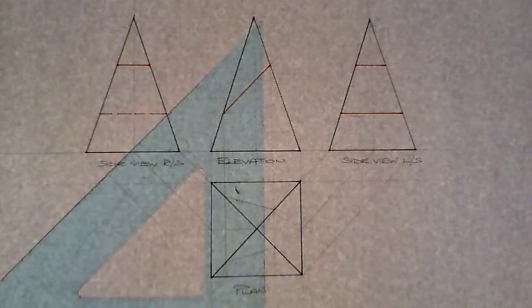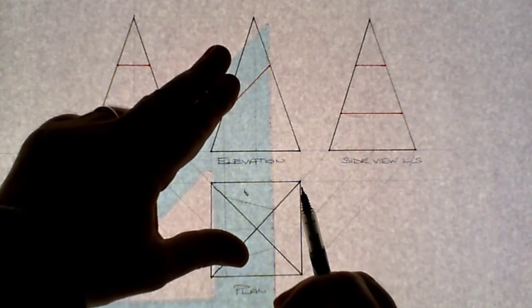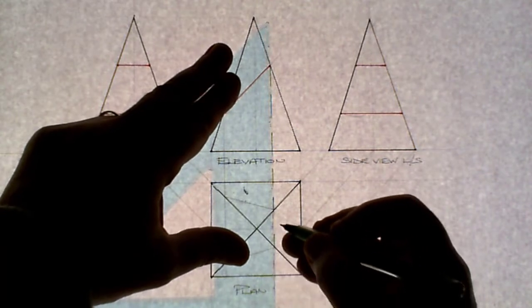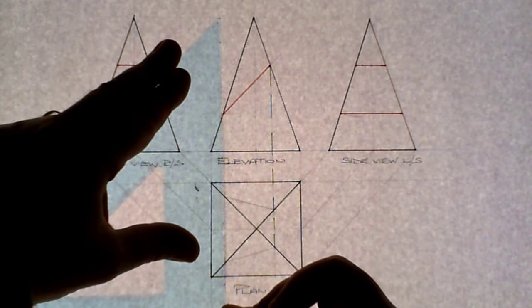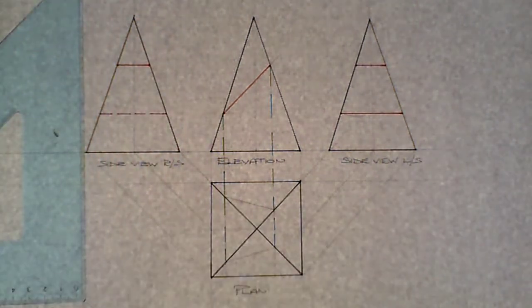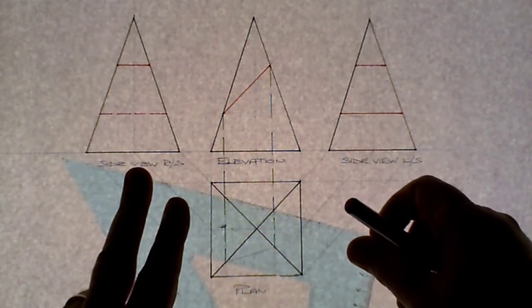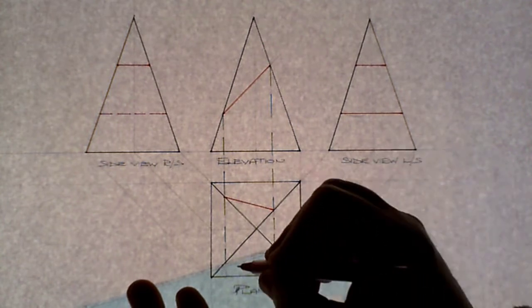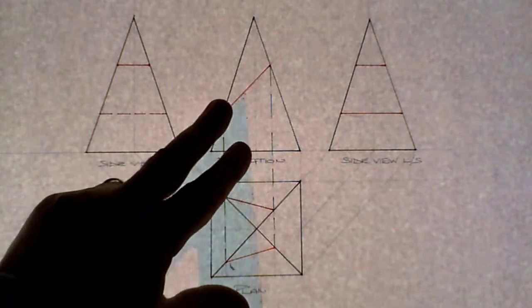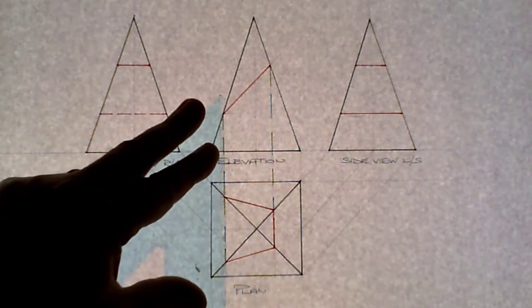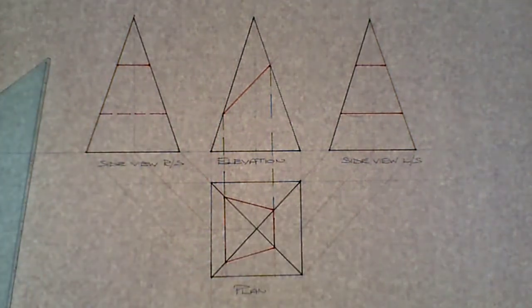Indicate the points in green, then show the imposition of the cut on the plan — this point, this point, this point, this point, and connect point to point across the plan.